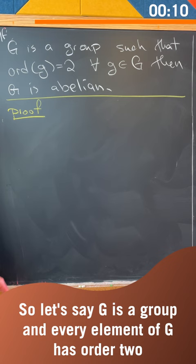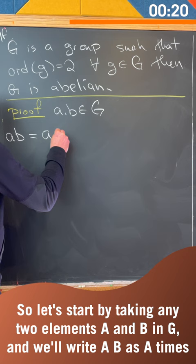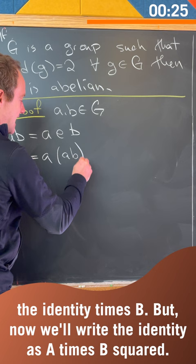Okay, so let's start by taking any two elements a and b in G, and we'll write ab as a times the identity times b. But now we'll write the identity as a times b squared.